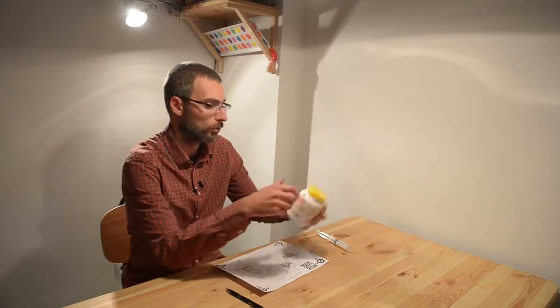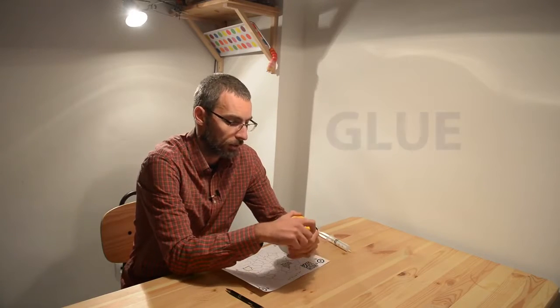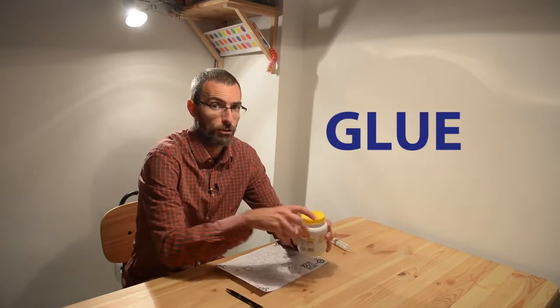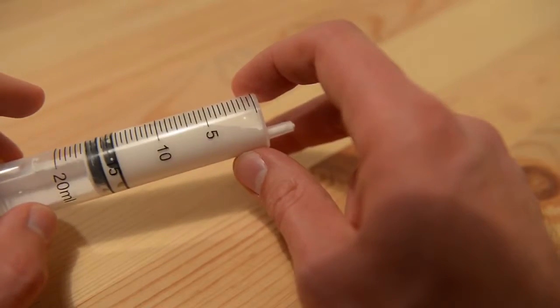Today we're going to use household glue - common glue used for furniture. To draw a fine line, we'll use a syringe because it has a narrow tip. Let's start.